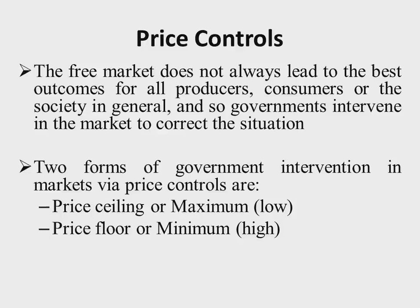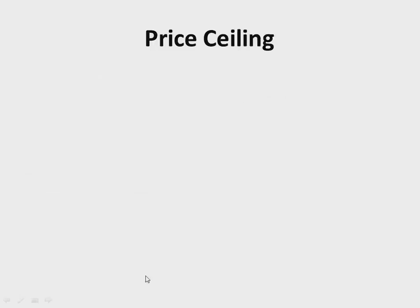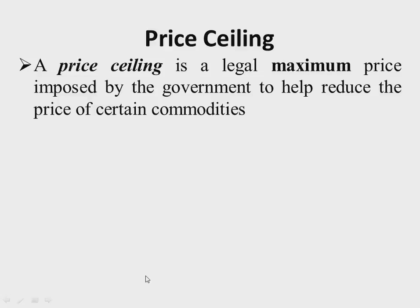The price ceiling is a legal maximum price imposed by the government to help reduce the price of certain commodities. This ceiling is usually imposed to encourage consumption of certain goods. It is a price set below the equilibrium point such that no firm is allowed to charge a price above that point.